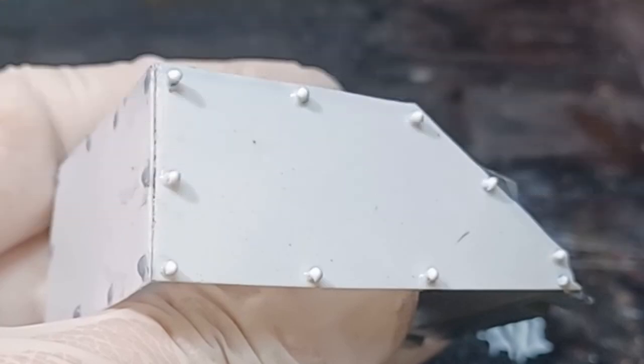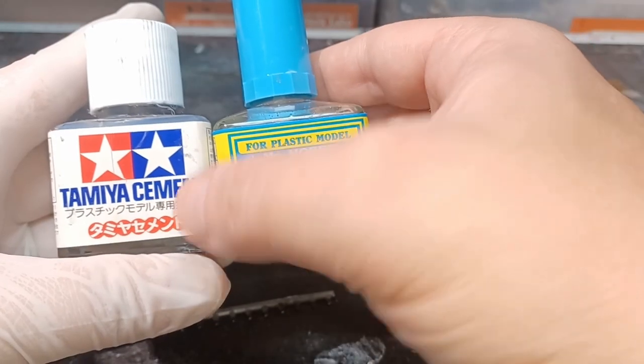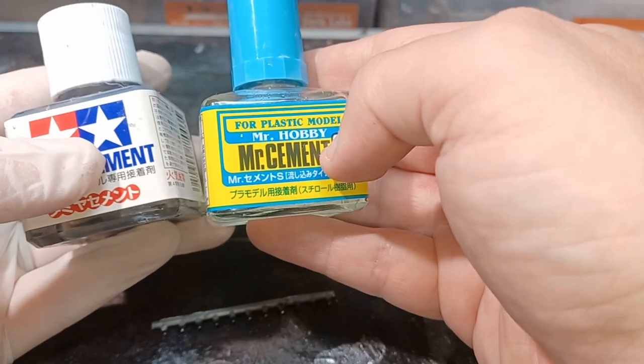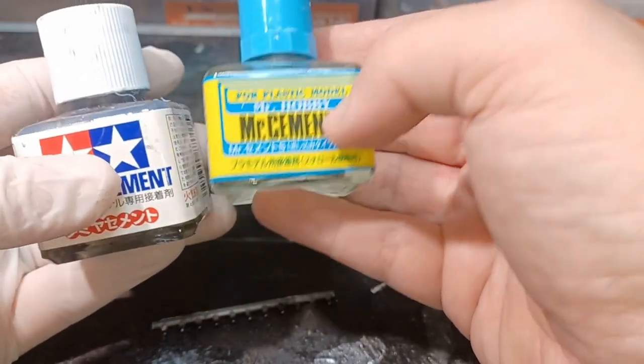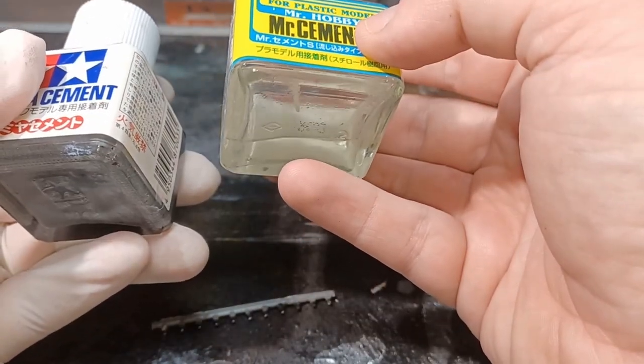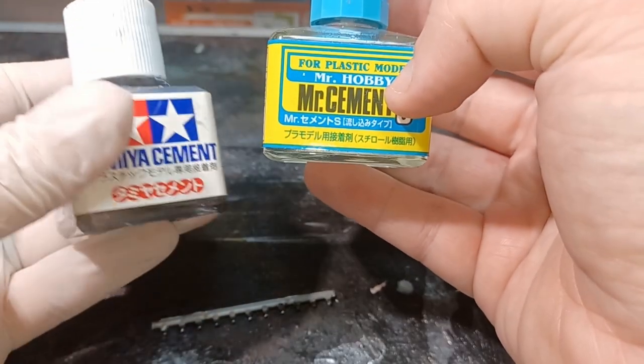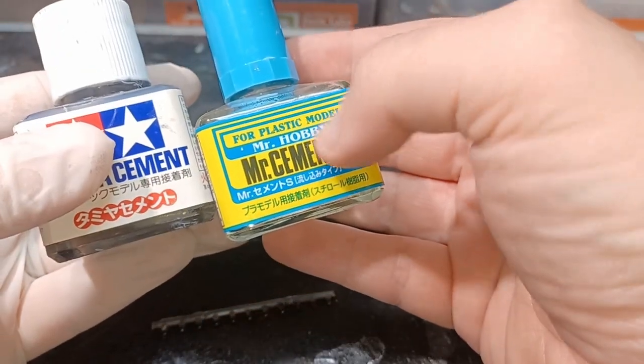That's the first type of rivet completed. For the second type of rivet, and I personally prefer using this one myself, I got myself some plastic cement from two different companies: Mr. Hobby and Tamiya. It doesn't matter which brand you use, and you don't need to mix them together as I do in this video, as it makes absolutely no difference to the end result.